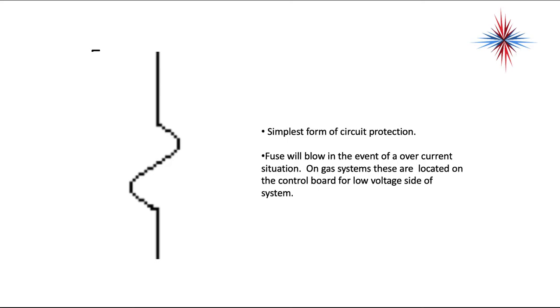This is a fuse. It's the simplest form of circuit protection. A fuse will blow in the event of an overcurrent situation. On gas systems, these are located on the control board for low side of the system.